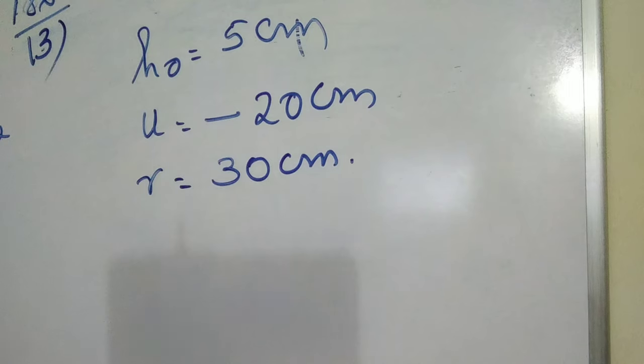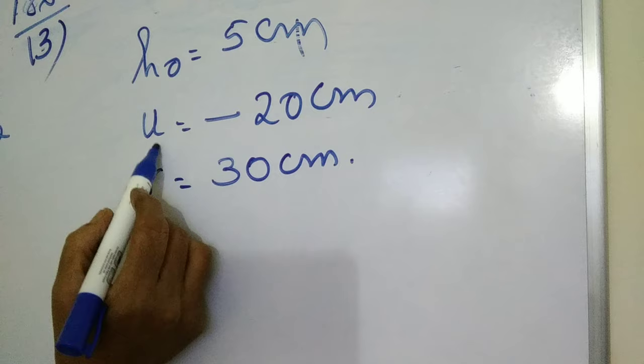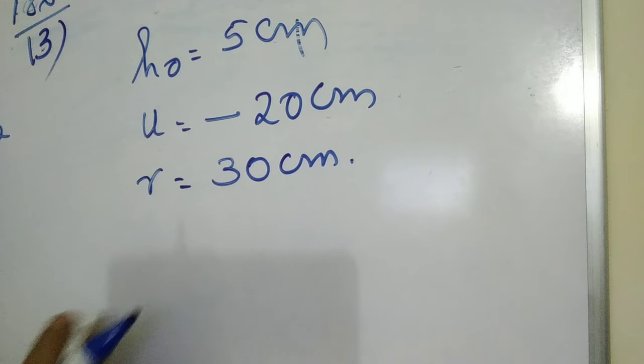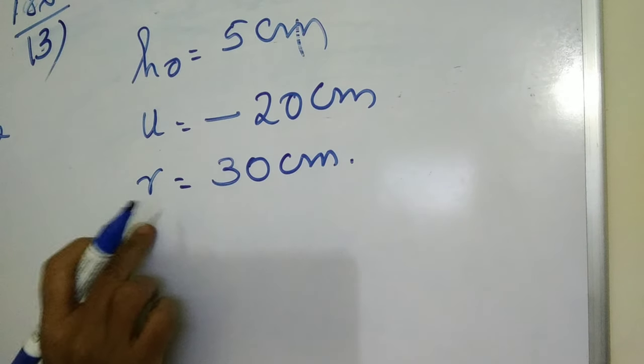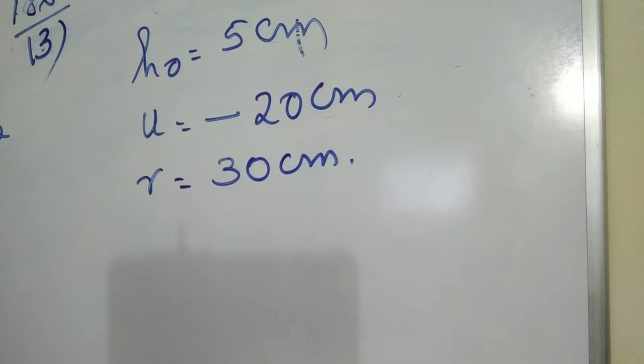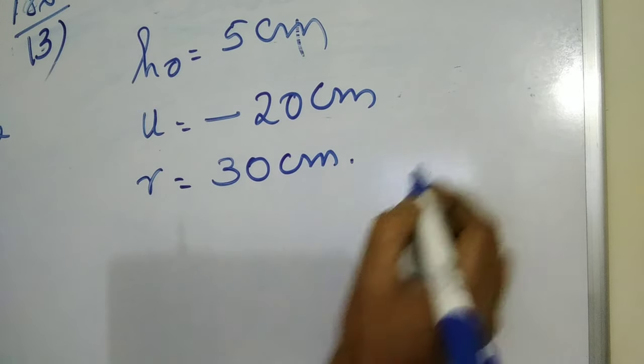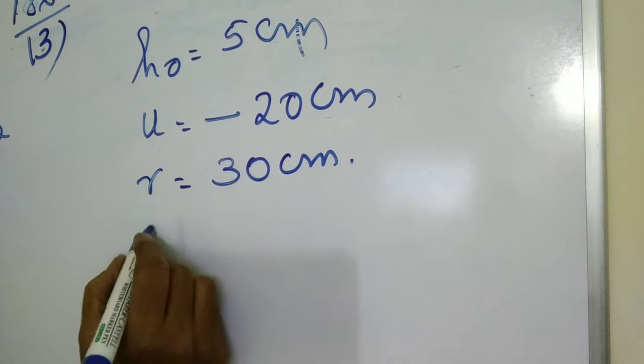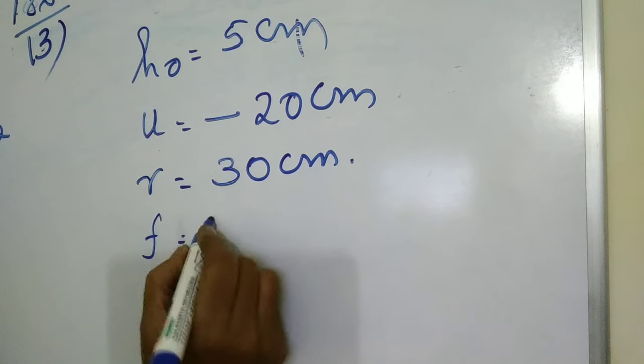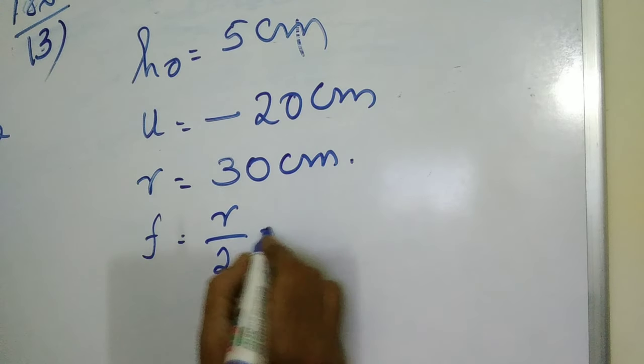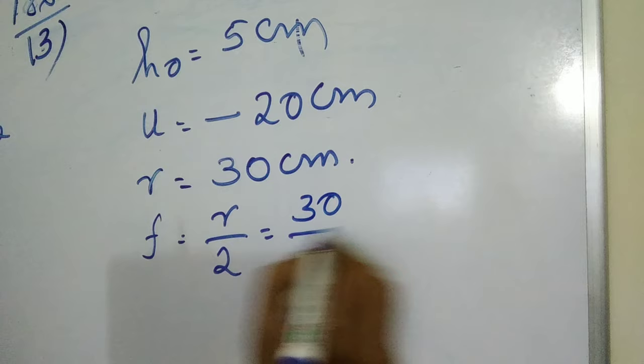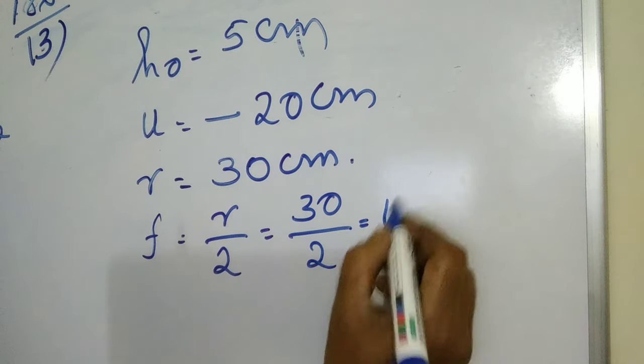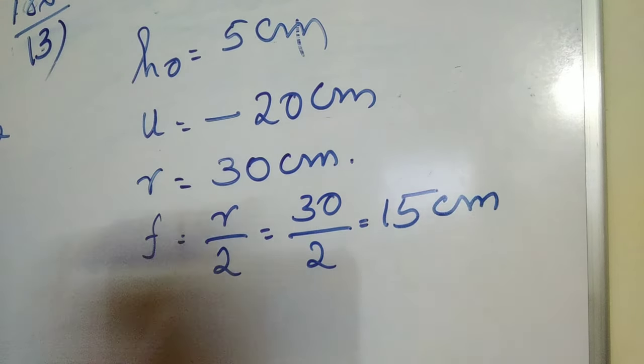Here R is given. In order to find the position of the image, you have to know U and F. But instead of F, here R is given. From that R, we can find the value of F. F equals R by 2. That is 30 by 2, which is equal to 15 cm. Since it is a convex mirror, the sign is positive.